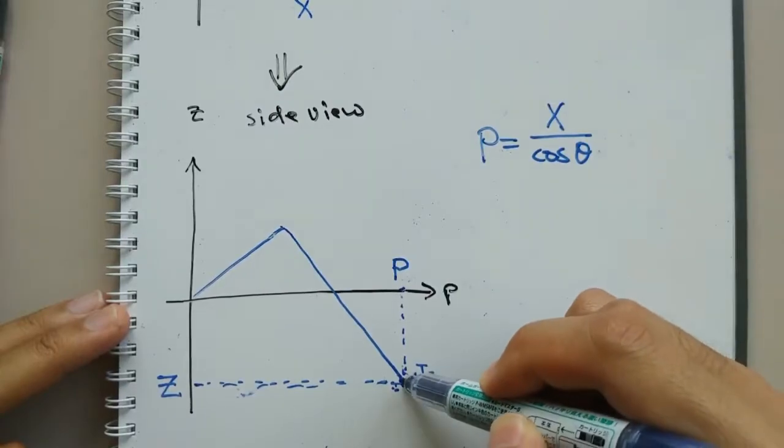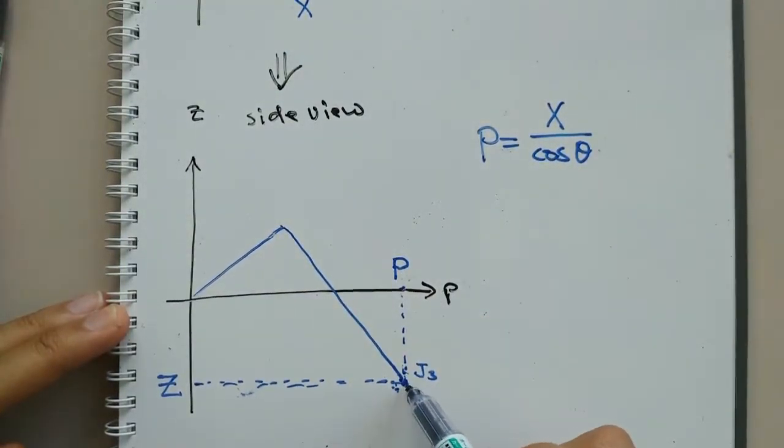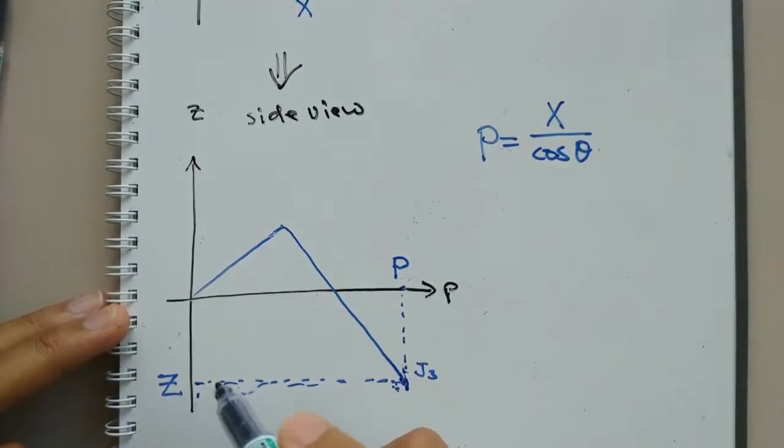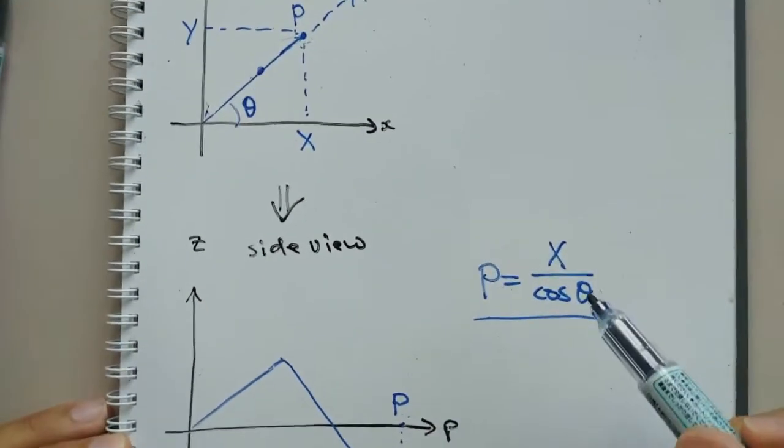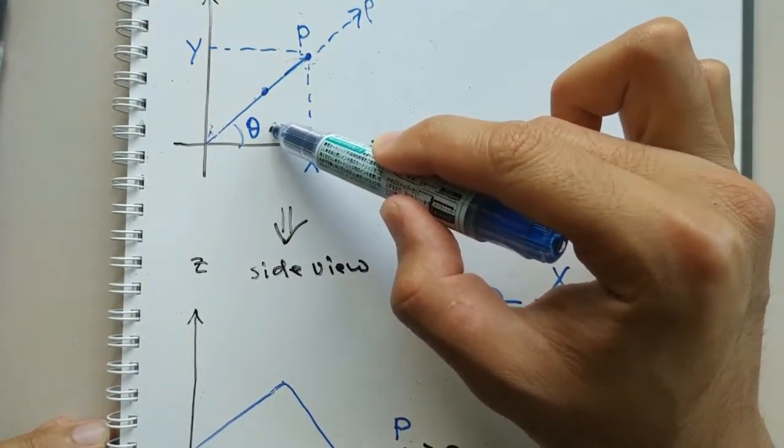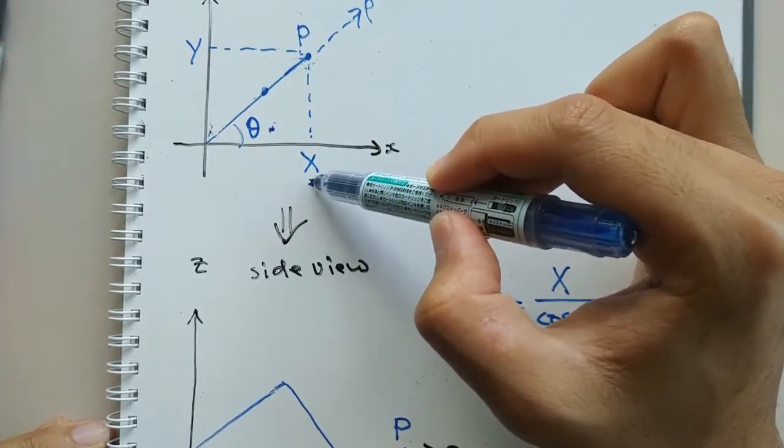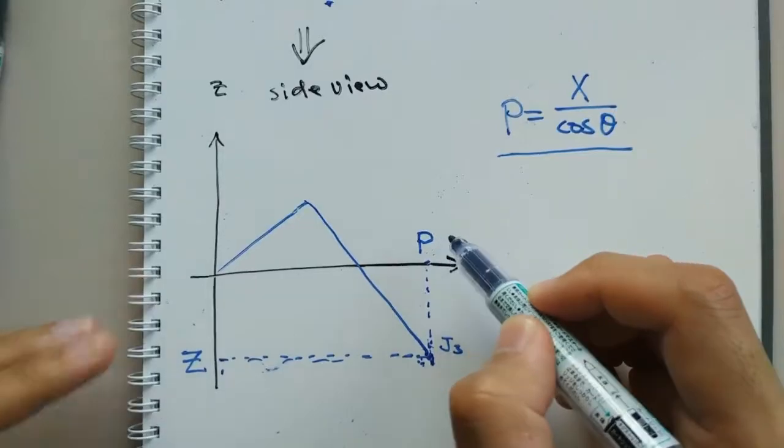We can now find the distance between j3 and the z-axis using this formula. From the angle we found before and coordinate x, we can find p.